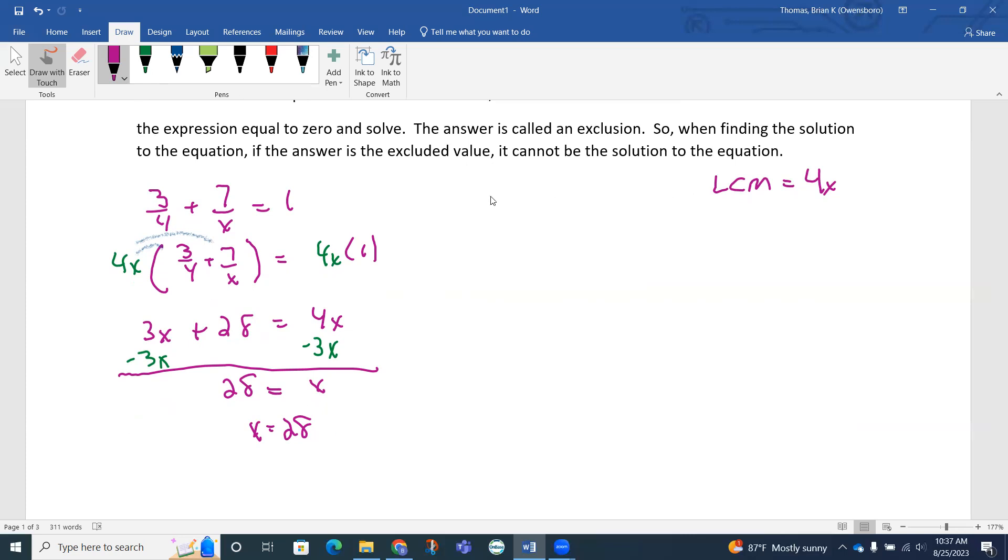If I want to check it, 3 fourths plus 7 over 28, does that equal 1? If I was checking this, notice the 3 fourths, but also how 7/28 actually reduces to 1 fourth, because I can divide the numerator and denominator both by 7 and reduce that to 1 fourth. We know that 3 fourths plus 1 fourth is 4 fourths, and 4 fourths is the same thing as 1. This is a true statement. It checks.